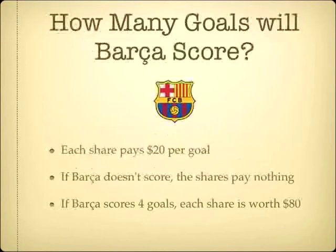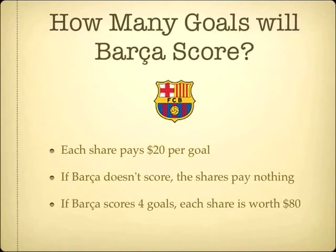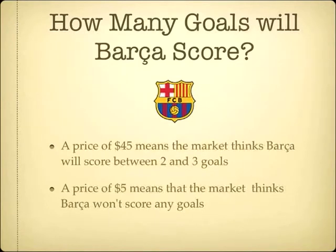For example, if I wanted to figure out how many goals Barcelona were going to score, a share might be worth $20 for every goal they score. If Barca doesn't score, the share is worth nothing; if they get four goals, it's worth $80. A price of $45 might mean the market thinks Barca will get about two goals, whereas a price of $5 might mean the market thinks they probably won't score at all.